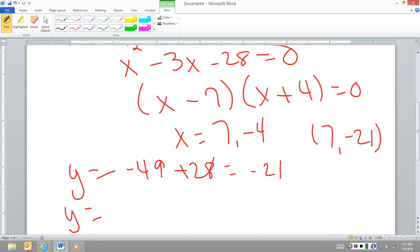I'm going to do the same with here. So I have negative 4 squared is just 16. So this is negative 16 plus 28. So I have 28 minus 16, 12. So my second point is negative 4, 12.